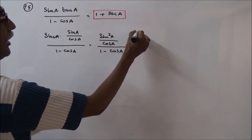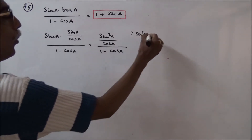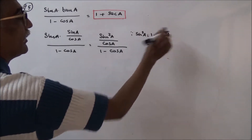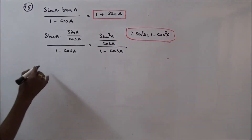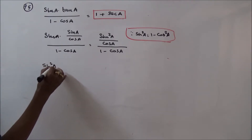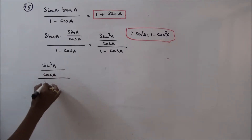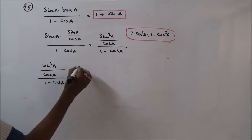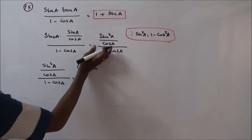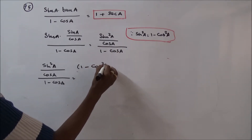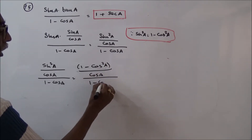Since sine squared A is equal to 1 minus cos squared A, I substitute this in. So sine squared A by cos A divided by 1 minus cos A becomes 1 minus cos squared A by cos A, divided by 1 minus cos A.